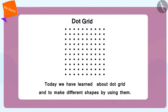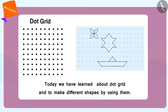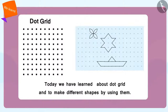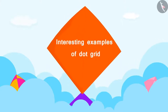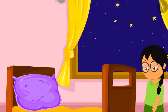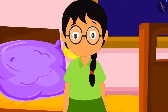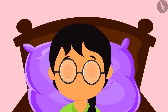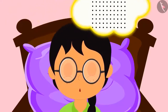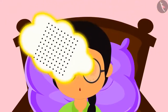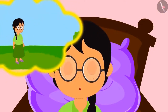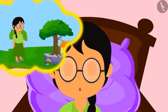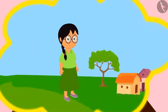In the previous video, we saw what a dot grid is and how to create a shape using a dot grid. In this video, we will learn more about this using some interesting examples. Meenu is very sad because she could not prove that she is the smartest. She went to sleep feeling very sad. In her dreams, she sees a dot grid flying.